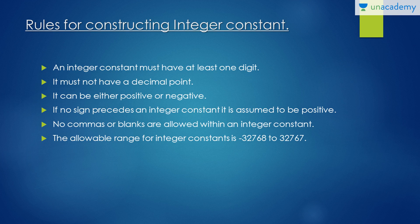Let's see the rules for constructing integer constants. An integer constant must have at least one digit. It must not have a decimal point. It can be either positive or negative. If no sign precedes an integer constant it is assumed to be positive — the compiler assumes the value will be positive. No commas or blanks are allowed within an integer constant; if you use them the compiler will show an error.